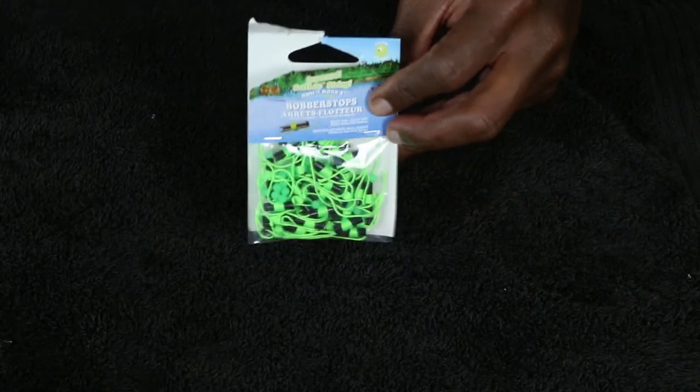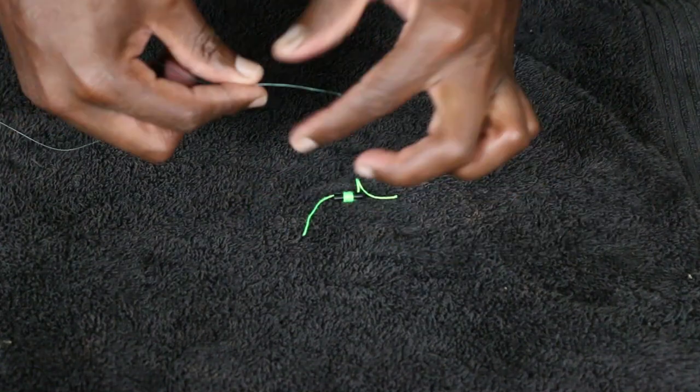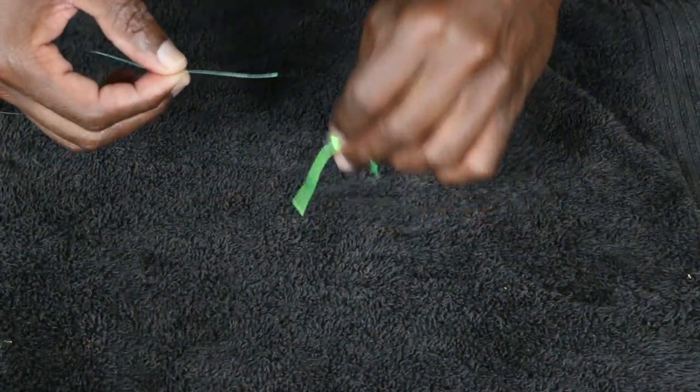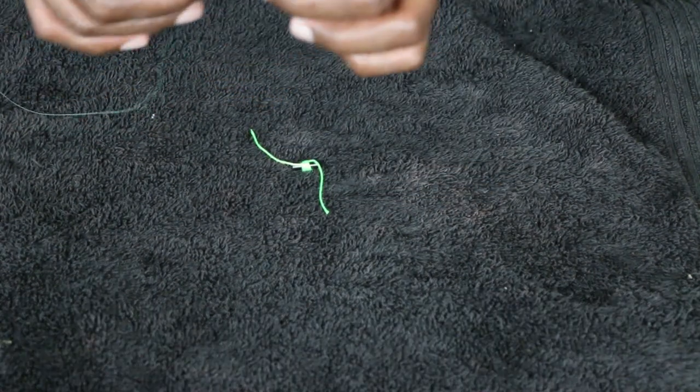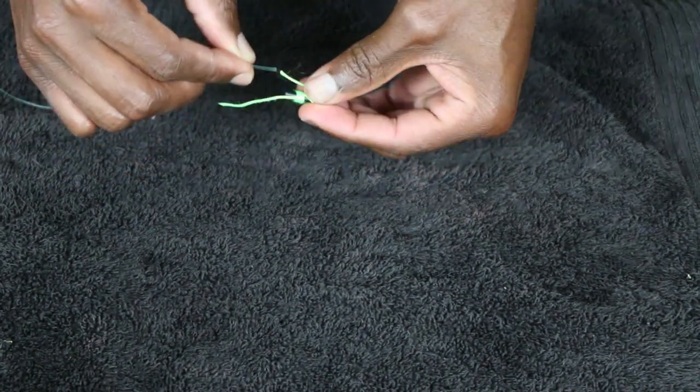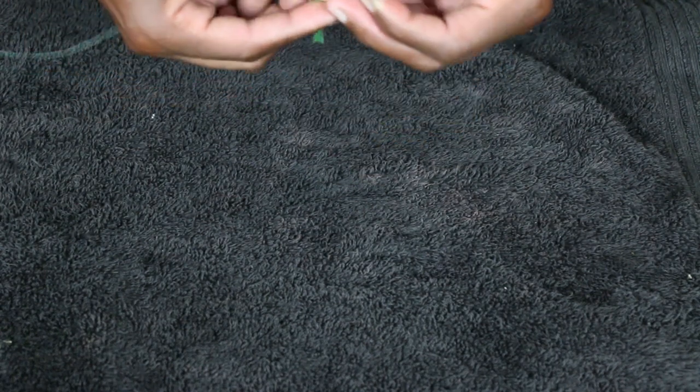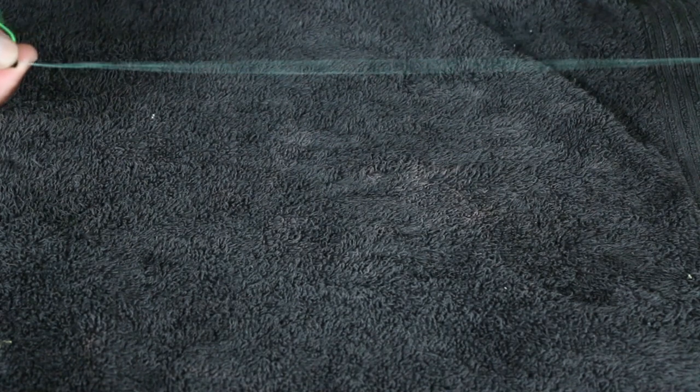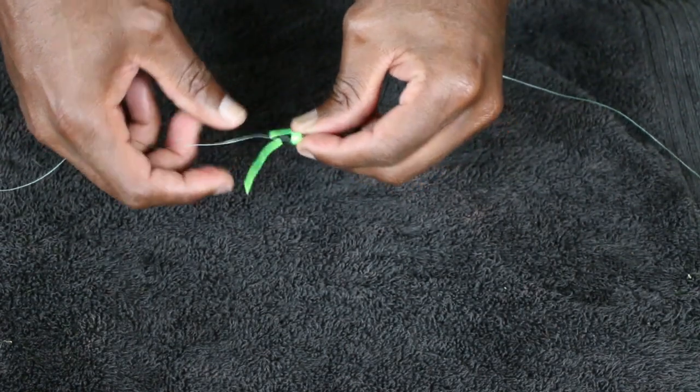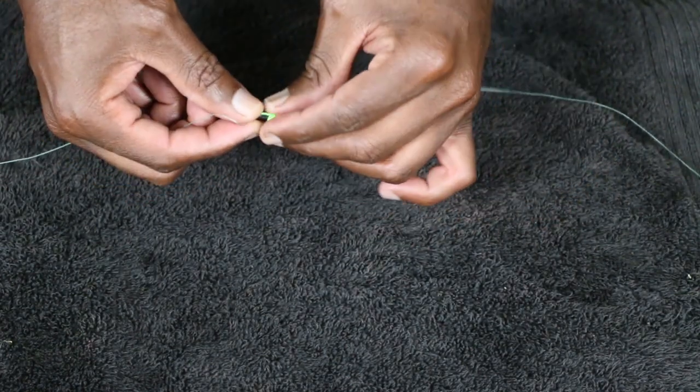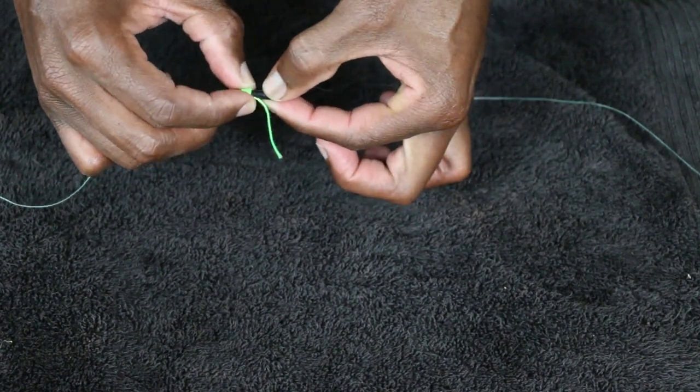Alright, so first you're going to start with your bobber stopper. Now as far as how to install these, it comes with a little tube. I have 30 pound braid, so all you have to do is insert your line, just tag it nice and flat through the tube. Give yourself enough room to create your leader, so maybe like a foot. At that point, what you're going to do with that little plastic tube, you're going to grab the tube and pinch the actual spool and it's just going to pull right off. See that?